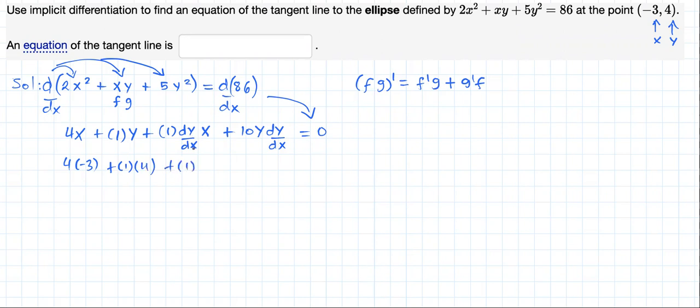This dy/dx is the slope of the tangent line. I'm going to represent it with the letter m. So we have 4x + y + x(dy/dx) + 10y(dy/dx) = 0, where x is negative 3, y is 4, and dy/dx is m.